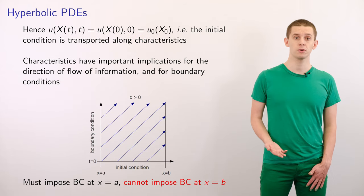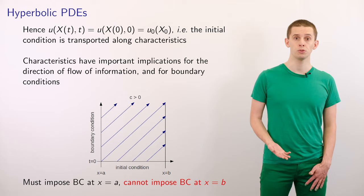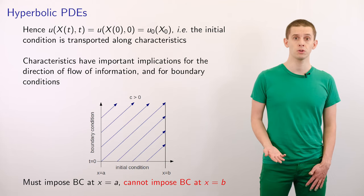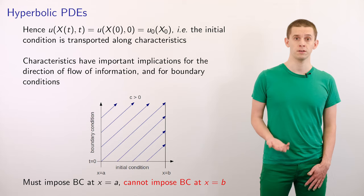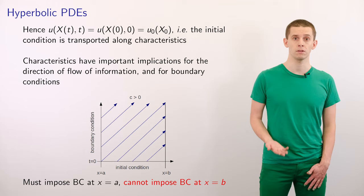So if we look at u(X(t), t), then that will be equal to u(X(0), 0), which equals our initial condition u₀ evaluated at x₀. We therefore see that our initial condition is transported along the characteristic.